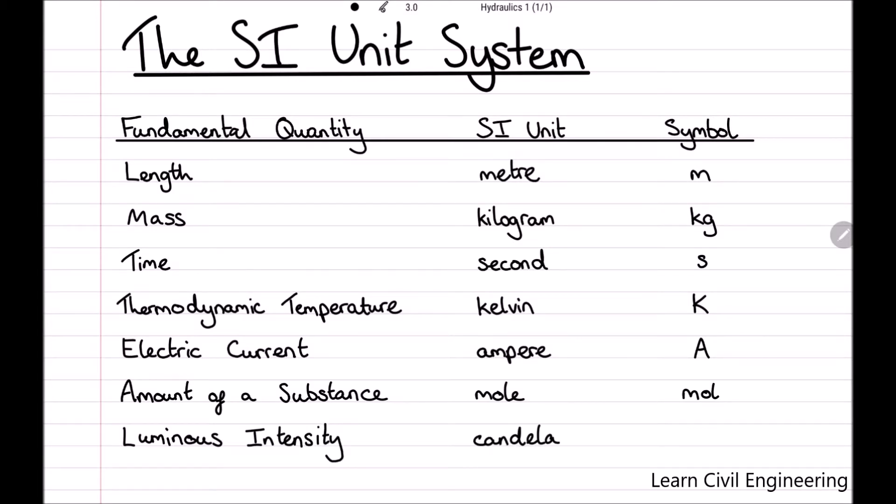The fundamental units are independent and therefore units of any physical quantity can be expressed in terms of or as a combination of the fundamental units. These units consisting of a combination of fundamental units are known as derived units.